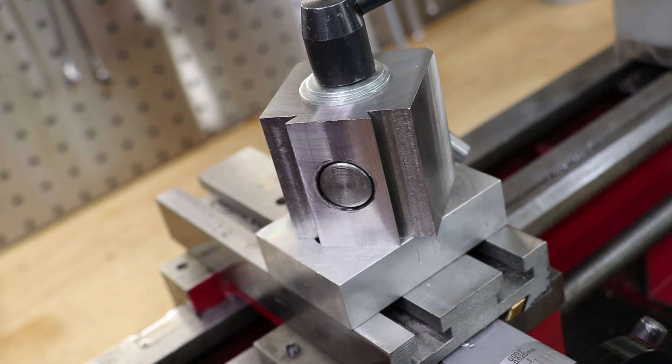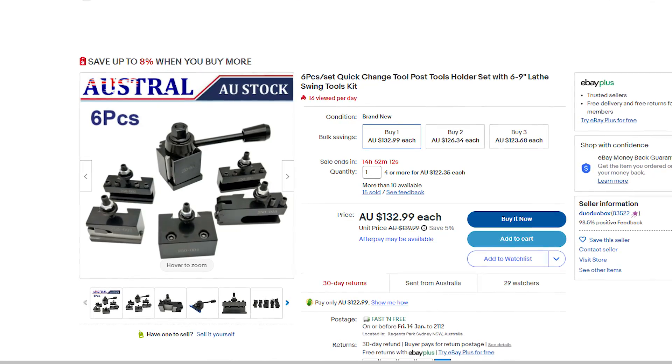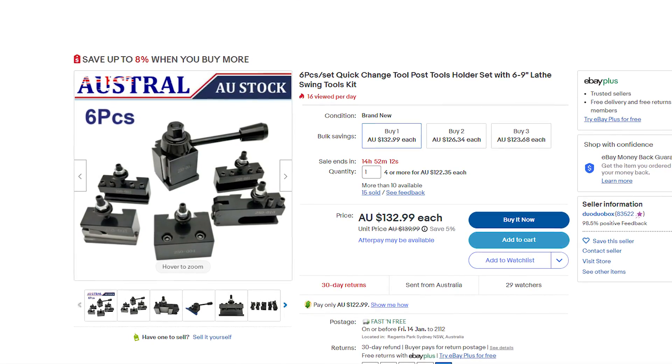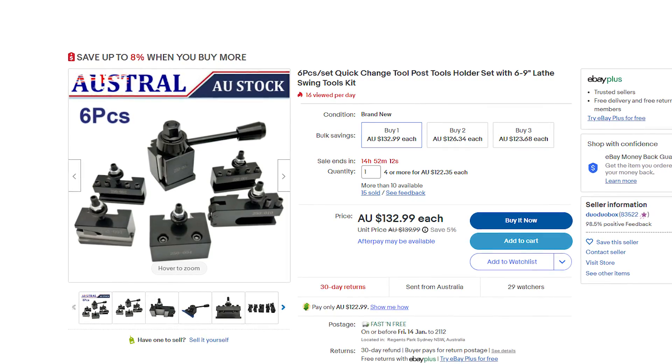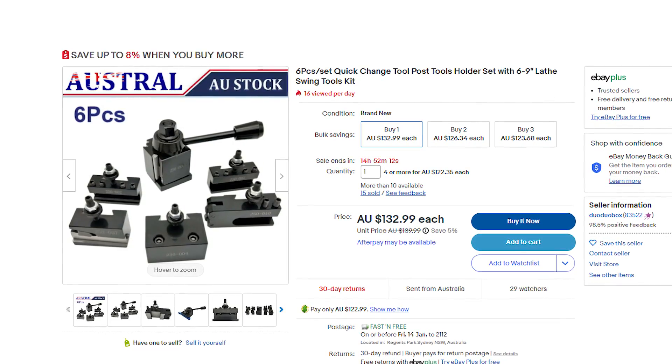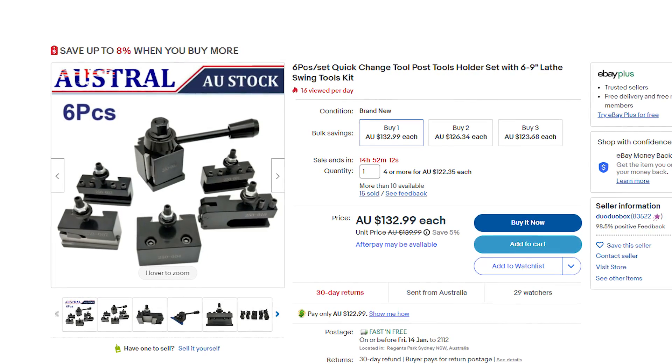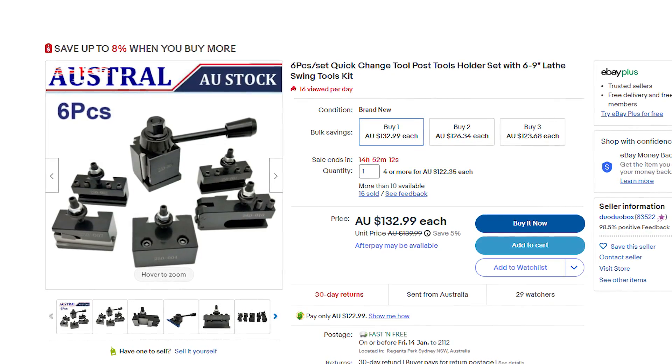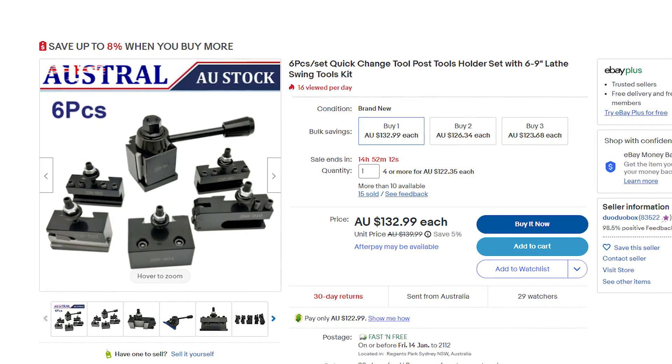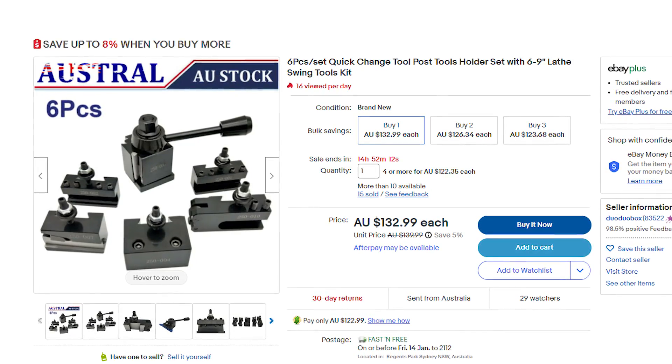The only real downside to them is they can be a little bit pricey. Everyone's favorite budget one is this steel one that has a wedge that moves up and down to lock the holder in place. And whilst I've never used one personally, more than enough people have given them their tick of approval. The starting price for them though is about 130 to 150 bucks.